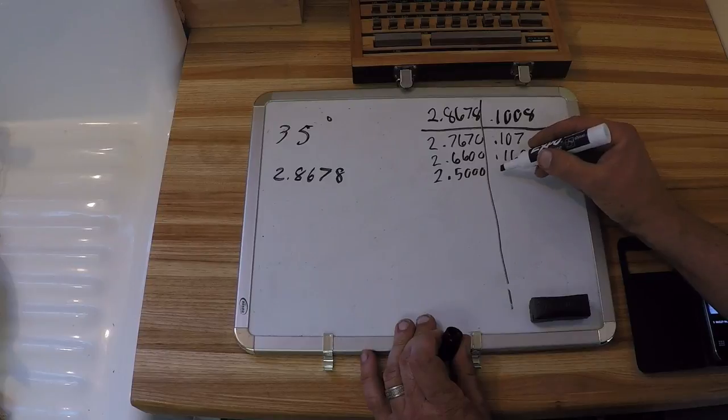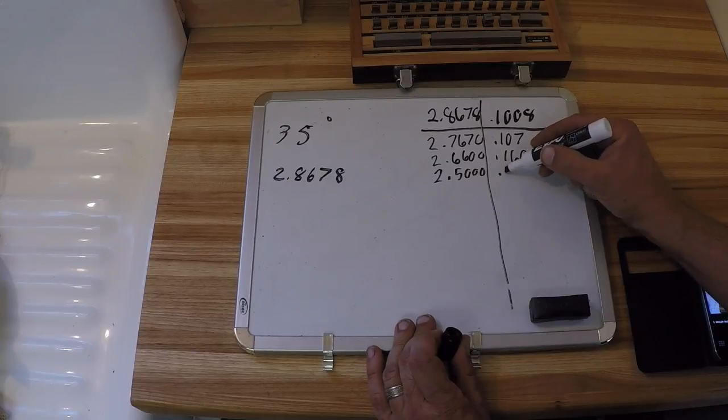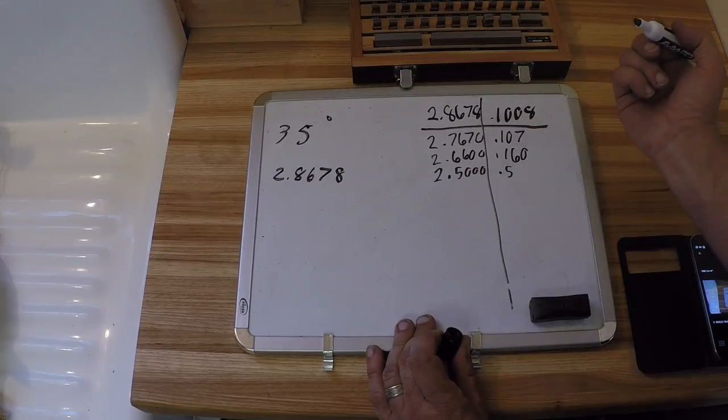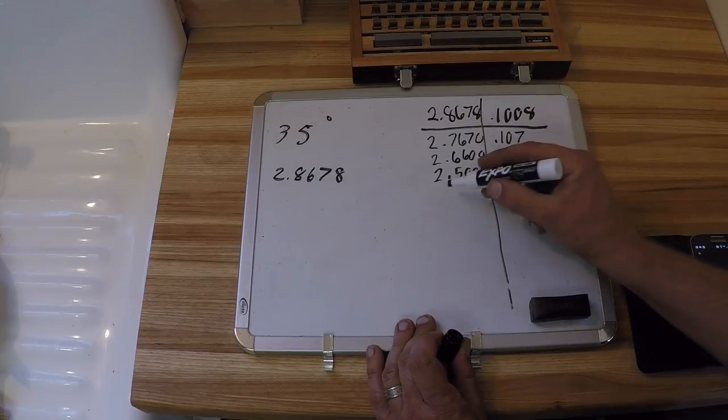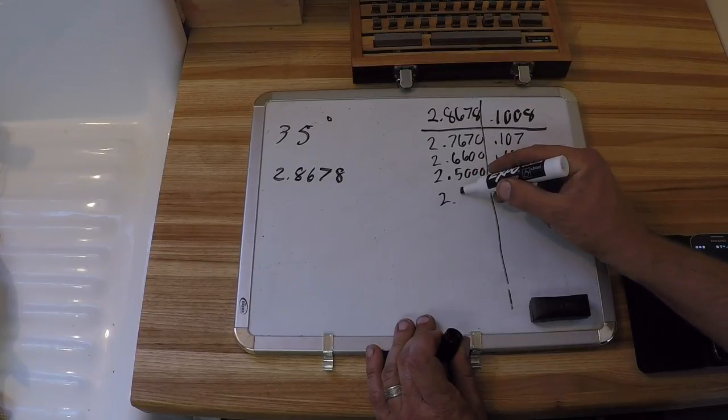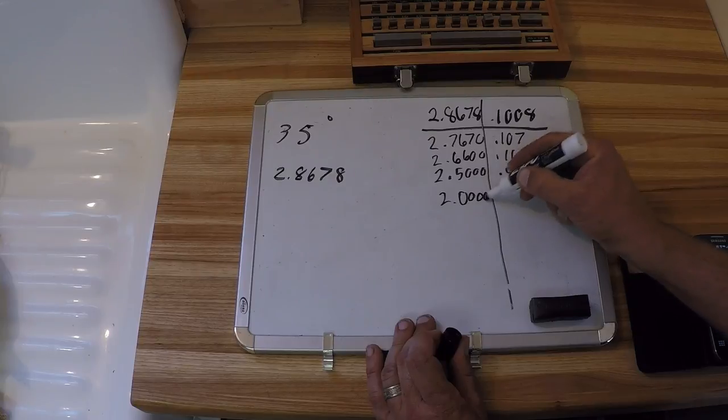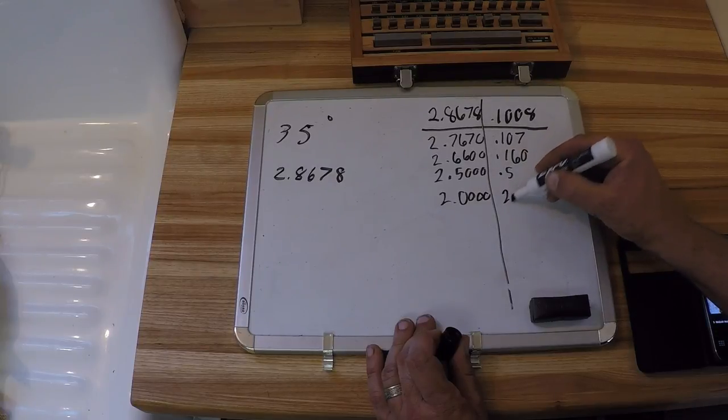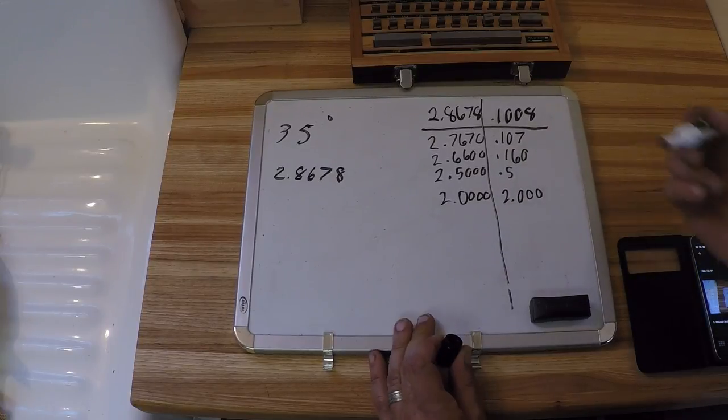And it gets really easy from here. So the next one we need is 0.5, and after that, that leaves us 2 inches over here. And that means we need a 2 inch block.